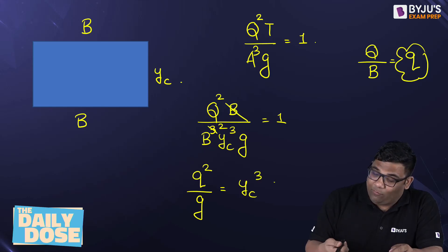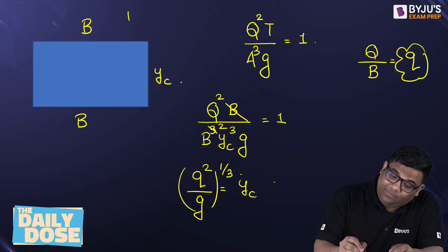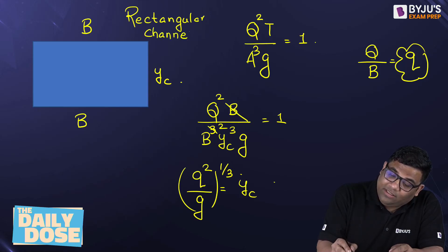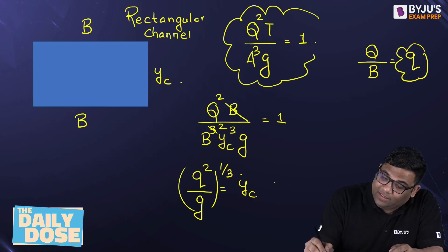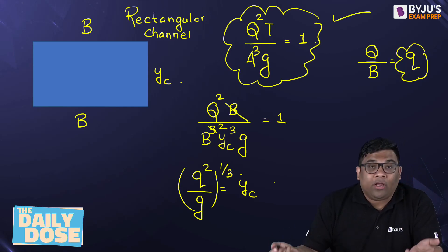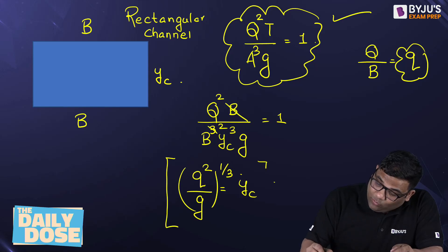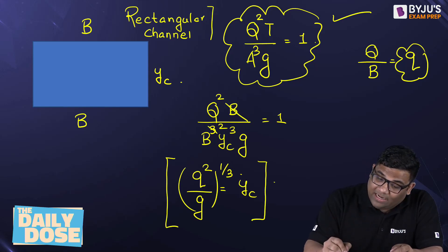So yc for a rectangular channel — when I am using the rectangular channel, I get this particular equation. This equation comes from the general governing equation, which is applicable for all cross sections. But this simplified equation I can only use for a rectangular channel only.